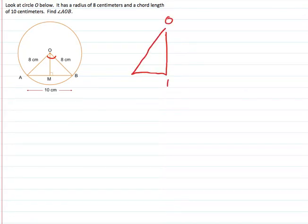So we have O, M, and A with a hypotenuse of 8. And we know AM is 5 because it's half of the chord length.